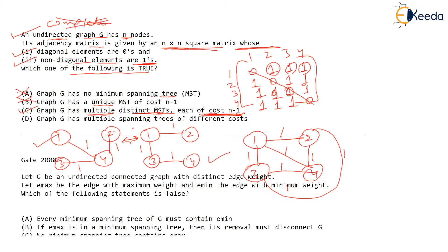So multiple distinct minimum spanning trees are possible, each of cost n minus one. Option D: graph G has multiple spanning trees of different cost — impossible. Whatever minimum cost spanning tree you construct will contain three edges, because there are four vertices. Any minimum cost spanning tree you construct will definitely have cost three. So different costs is impossible.